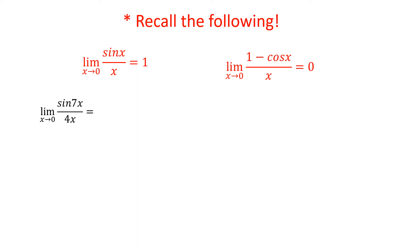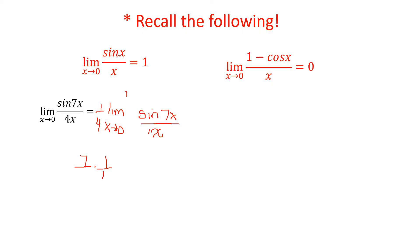The last one is similar to what we did before. We rewrite it as the limit as x approaches 0, putting 1/4 on the outside, of sin(7x)/x. In order for this to equal 1 we need a 7 in the denominator, so we multiply by 7/7, giving 7 times 1/4 times the limit of sin(7x)/7x. Since sin(7x)/7x equals 1, the answer is simply 7/4.